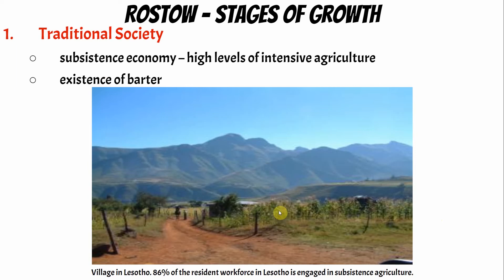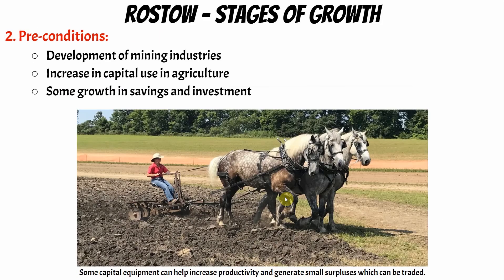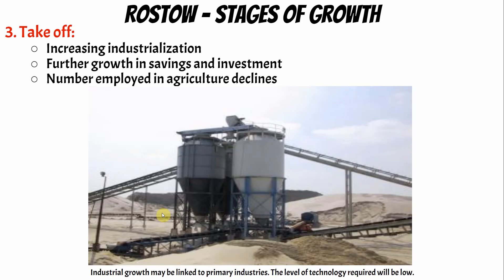As a country begins to develop, it moves from traditional into stage two: preconditions to take-off. This means still a lot of people are farming, but new practices are opening up where people farm more effectively — like discovering horses and a plow. Now fewer people are farming and more people can specialize. Stage three is take-off, probably the most important stage. Here a country begins to industrialize: people shift from farming to working in factories, start earning more wages, and move from the countryside to the city — rural to urban. People are still farming, just using more machines.